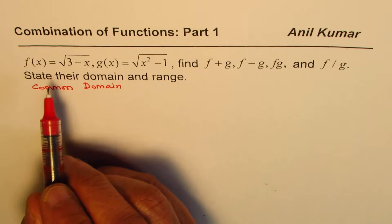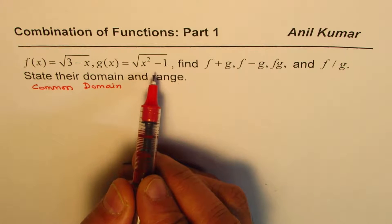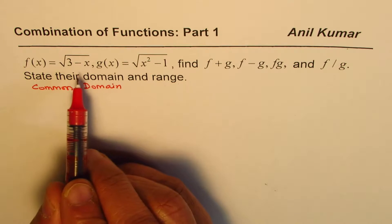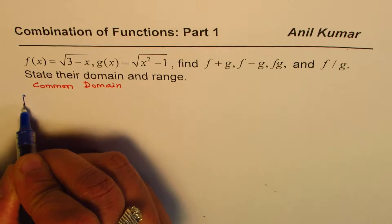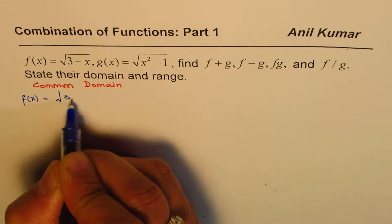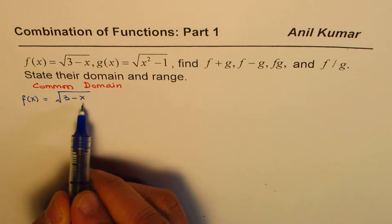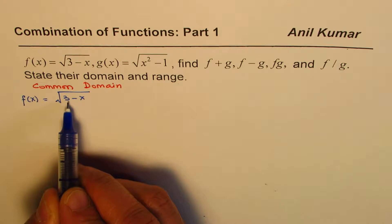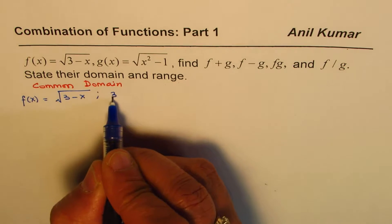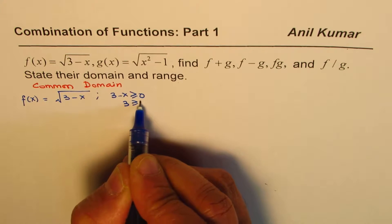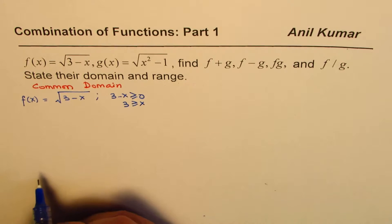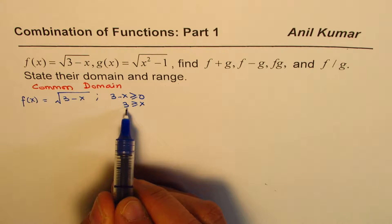We should have some values to work with, so I'll make a table of values with minimal entries. For f of x equals square root of 3 minus x, it is clear that x must be less than or equal to 3, because 3 minus x must be greater than or equal to 0. That means x is less than or equal to 3. So the domain of this function is x less than or equal to 3.